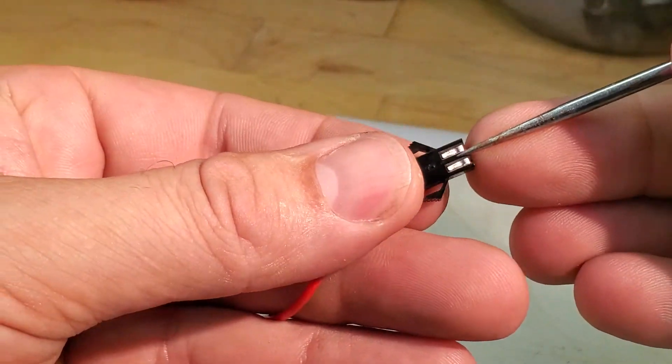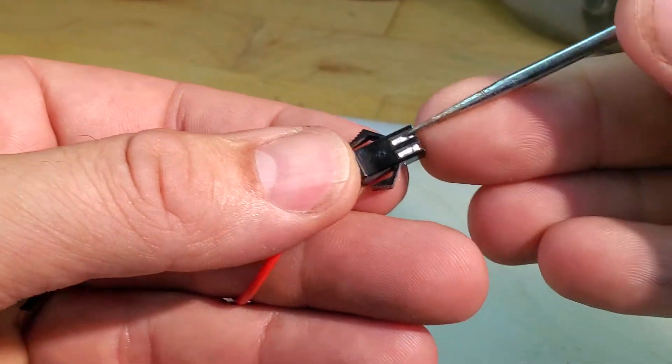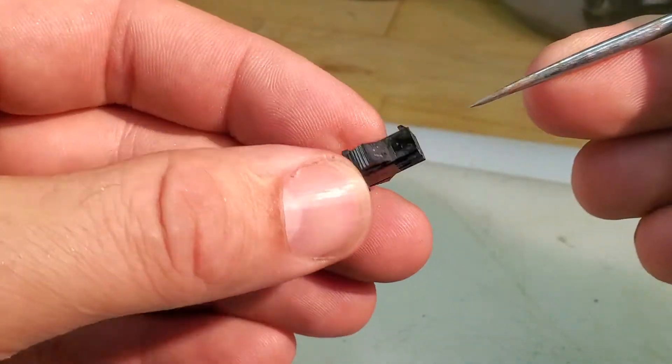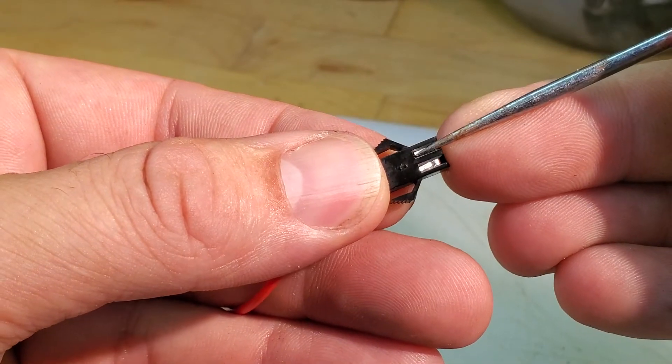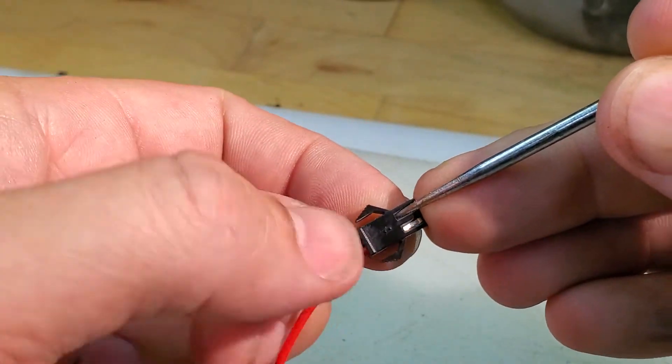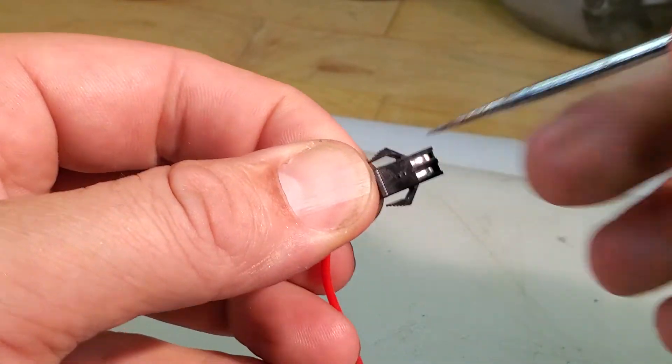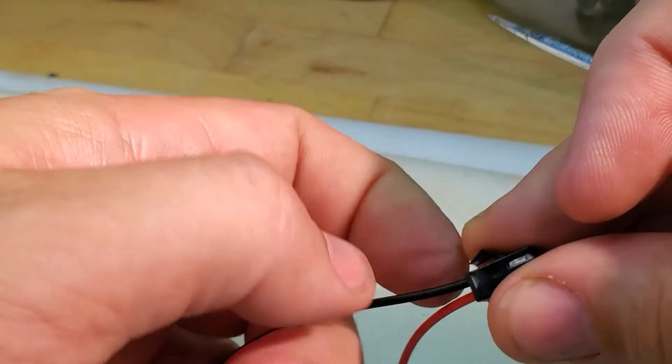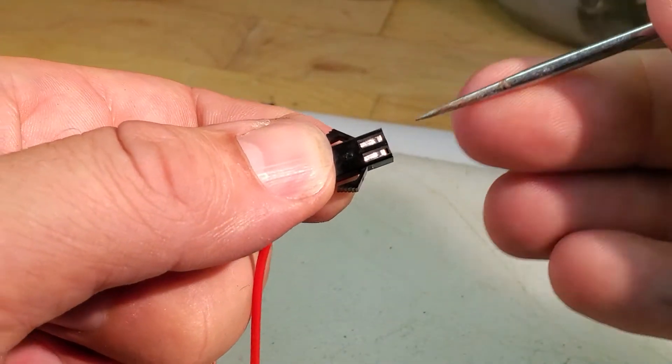And generally what I do is try not to stab myself too aggressively. But you hold this thing upside down and you push down on the back side of the pin here. And then at the same time pull, try and pull the pin out if you can get a grab on it with the other hand.